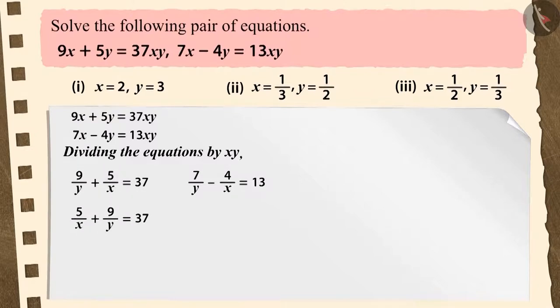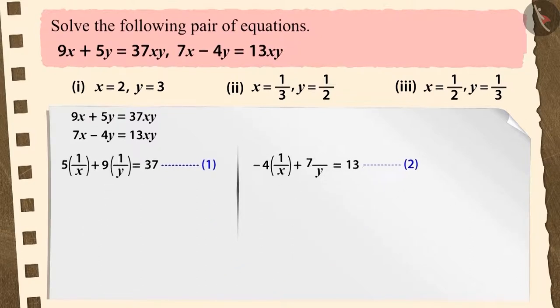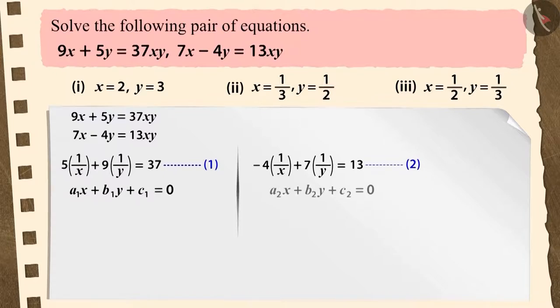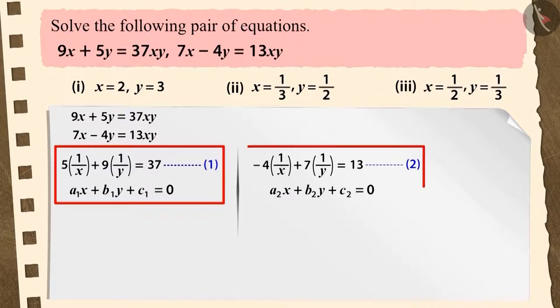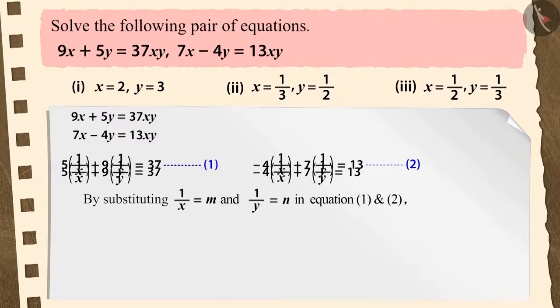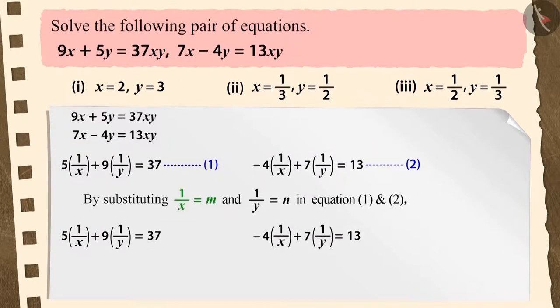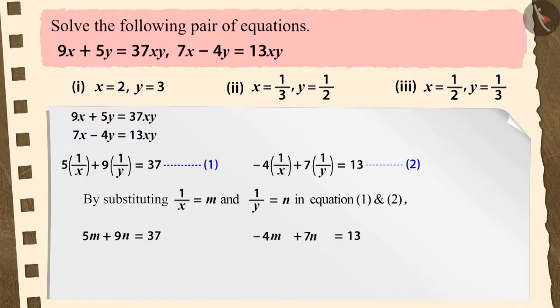This gives us equations one and two. We can write these equations as follows. You can see that equations one and two are not linear equations. If we replace one by x by m and one by y by n in equations one and two, then we can express these equations as linear equations three and four.